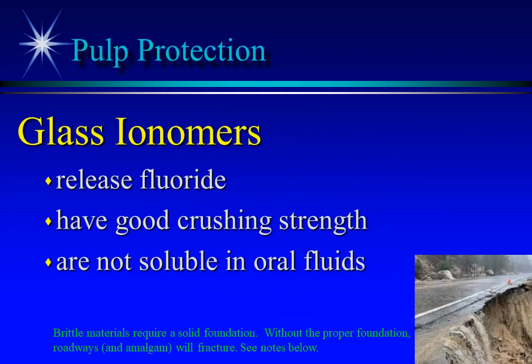These characteristics make glass ionomers the best current material for liners and bases. Crushing strength is important, as the liner or base is subject to chewing and clenching forces. Before glass ionomer use, some amalgam fractures were attributed to the liner/base material dissolving or fracturing, washing away the amalgam's foundation — much like erosion washing away soil beneath a road causes it to crumble.